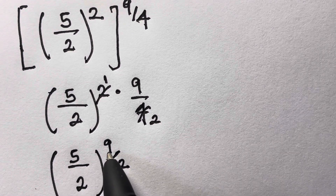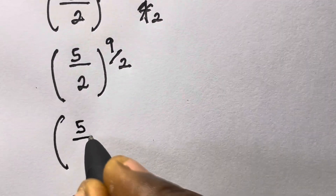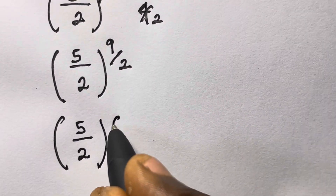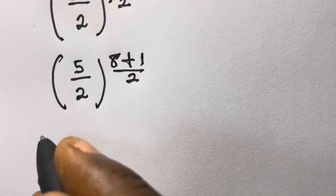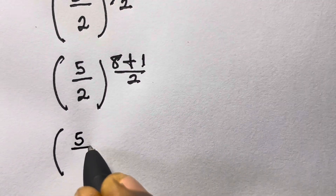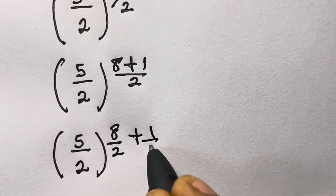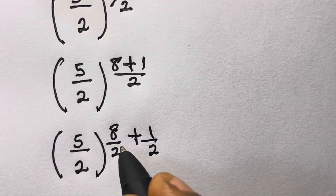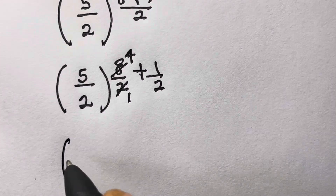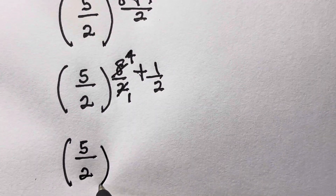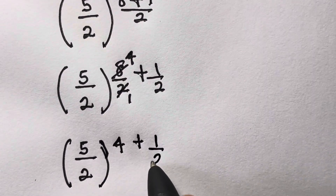From here we can express 9 as the sum of 8 and 1. So we have 5 divided by 2 raised to the power 8 plus 1 divided by 2. We separate that as 8 divided by 2 plus 1 divided by 2. Since 8 divided by 2 is 4, we have 5 divided by 2 raised to the power 4 plus 1 divided by 2.